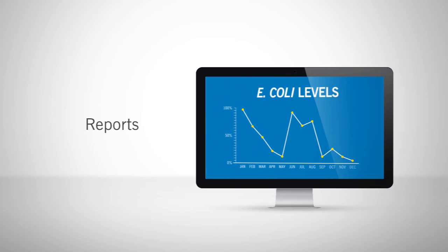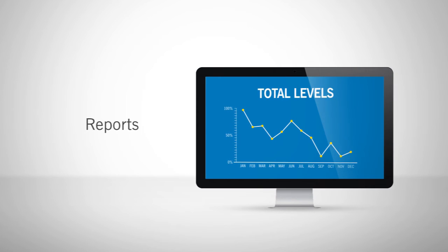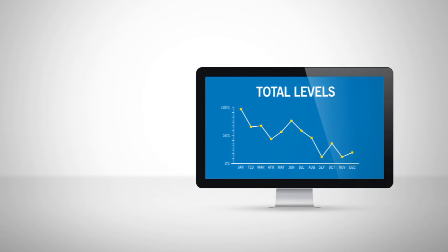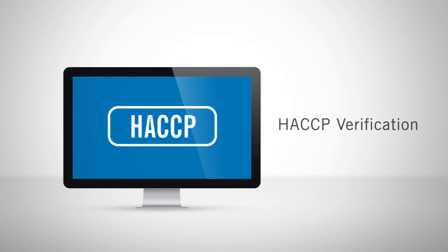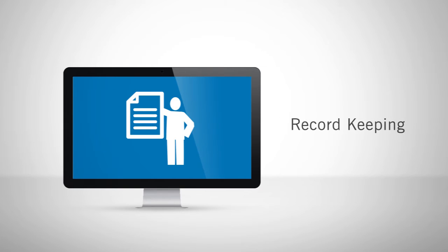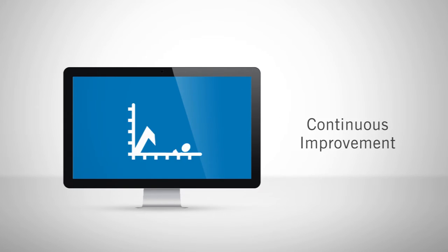The invaluable access to reports and graphs makes it easy to recognize trends and analyze sanitation effectiveness. SureTrend also assists in identifying environmental and product contamination, verifies sanitation as part of a HACCP program, maintains records for audit compliance, and facilitates continuous improvement.